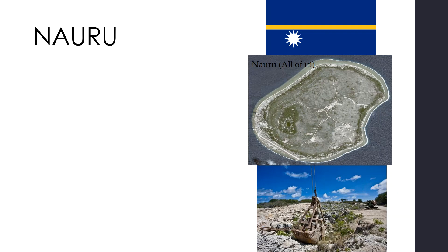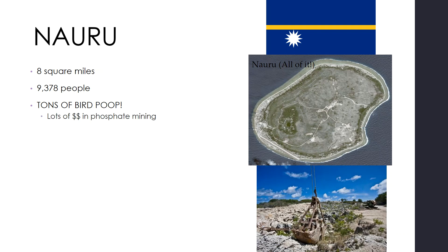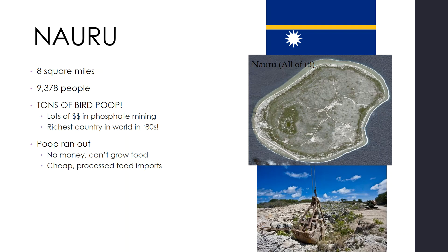Nauru, which is very small — only eight square miles with just over 9,000 people — had tons of bird droppings, which led to lots of phosphates on the island, so they made a lot of money in phosphate mining. In the eighties it was the richest country in the world even though it had only about 9,000 people. But their phosphates ran out, and we've talked about economies dependent on one single export and how that's not sustainable. Now they've run out of that money, their land is not good for growing food, and they rely heavily on aid and cheap processed food imports. Because of that, obesity and diabetes are rampant in Nauru, unfortunately, because there's not much access to fresh and healthy foods.